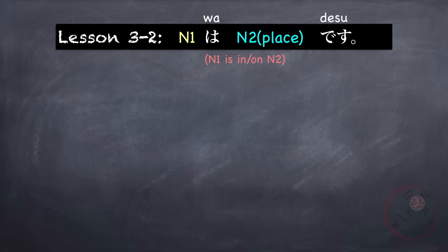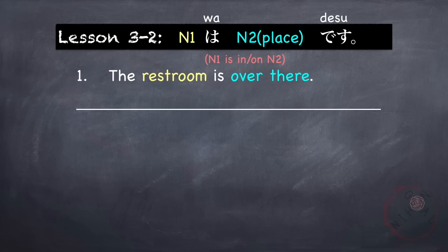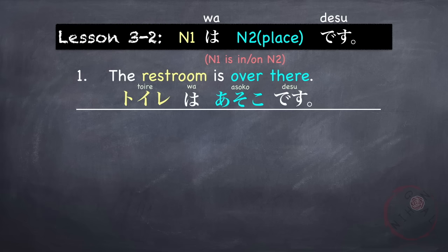For example, 'The restroom is over there.' Restroom or bathroom is toire. So the sentence is: Toire wa asoko desu — The restroom is over there.